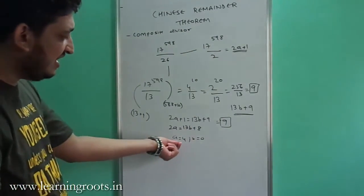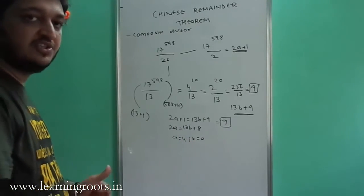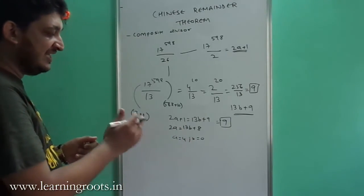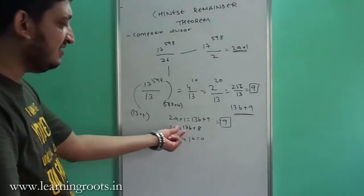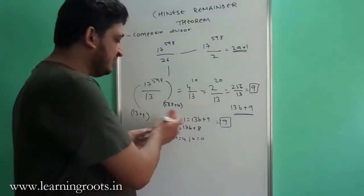Many a time people forget that B equal to 0 can also be a solution and they tend to do it for B equal to 1. If B is equal to 1, then RHS will become 21 which is not divisible by 2.